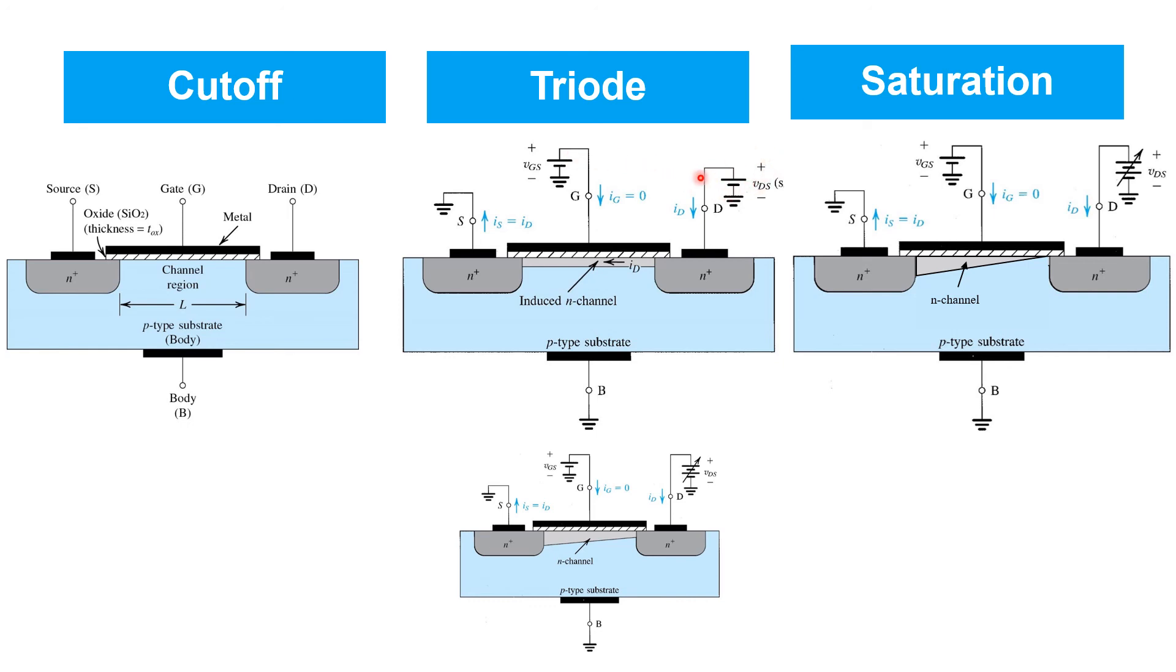The current starts increasing more slowly with VDS, until finally the drain end is pinched off. At this point, we say the transistor's in saturation and further increases in VDS give rise to very little change in drain current.